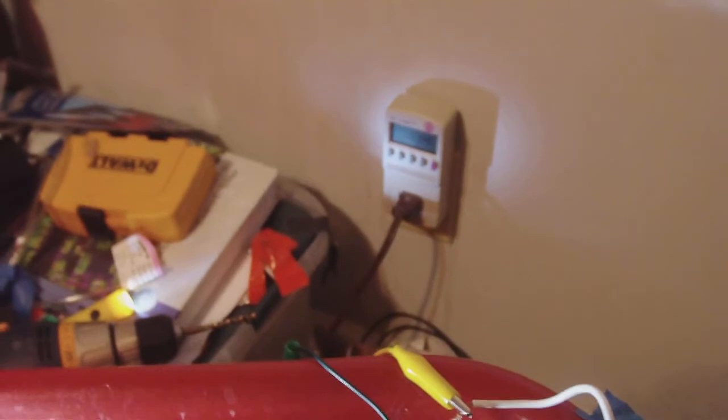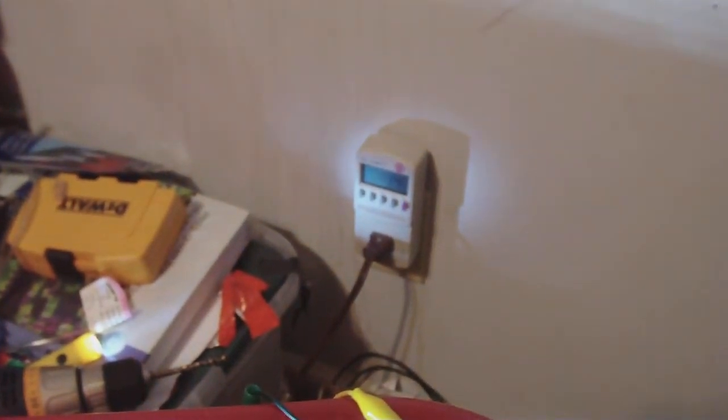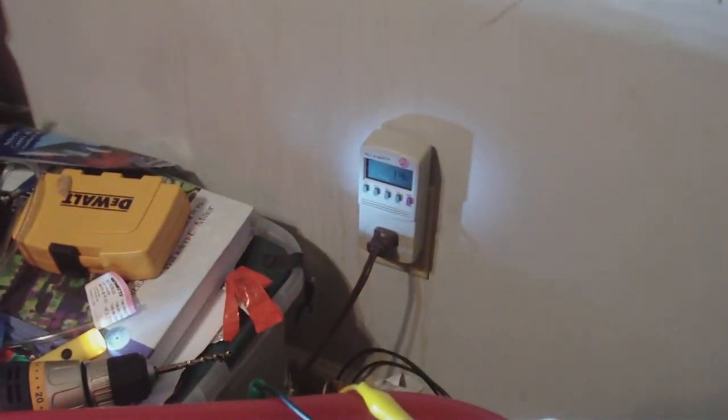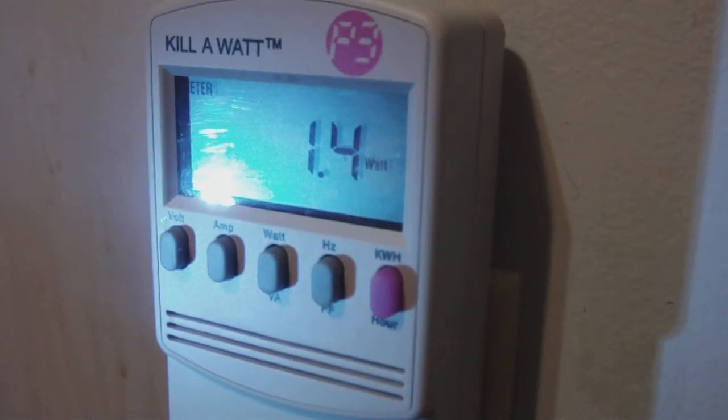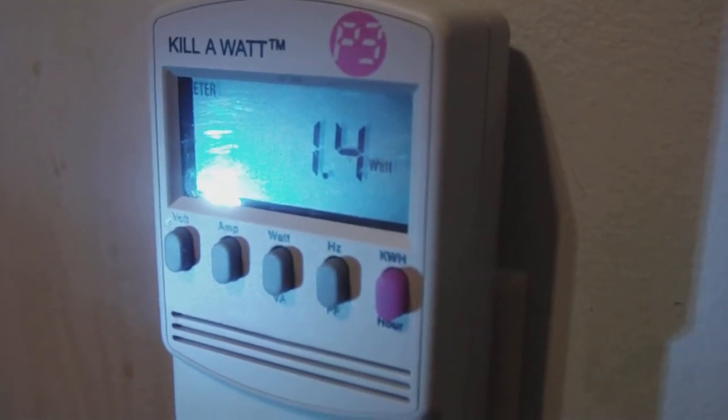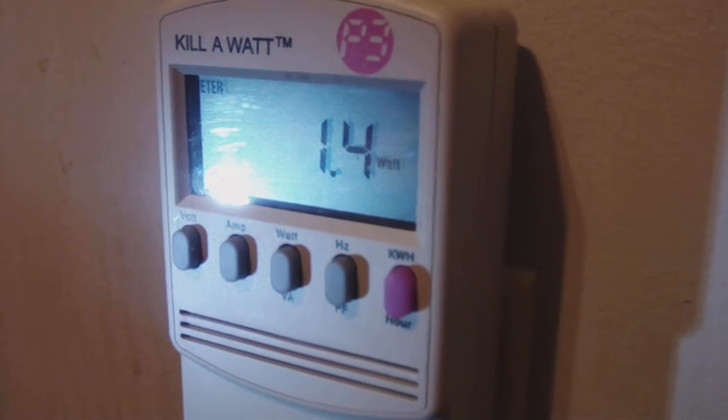I'm testing it because my test earlier with the inverter was wrong. The Kill-A-Watt meter works better with pure sine wave, which is your house's power. Right now, that's the wattage, 1.4 watts, and it's 1.5 watts on the package.